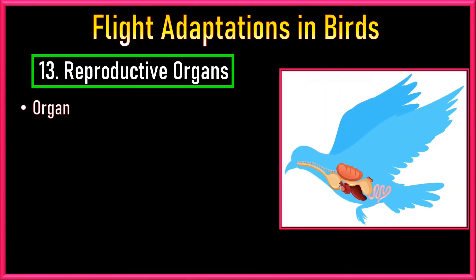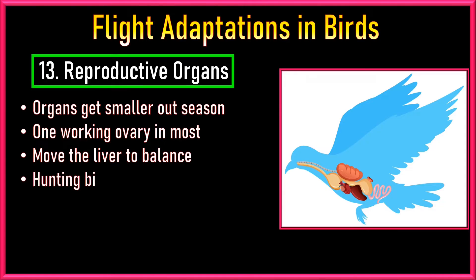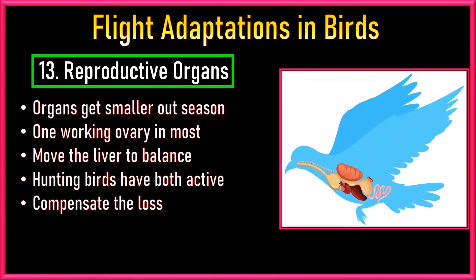Number 13: Reproductive Organs. In most birds, the ovaries and testes get smaller when it is not breeding season. Normally, there is just one working ovary in most birds and the second ovary is tiny to make the body lighter. Female birds move their liver to the right side to balance the weight difference. But for birds like eagles that hunt and grab prey with force, both ovaries are active — because when they catch struggling prey, the prey might break the eggs inside the bird, and having eggs in both ovaries helps make up for this problem.